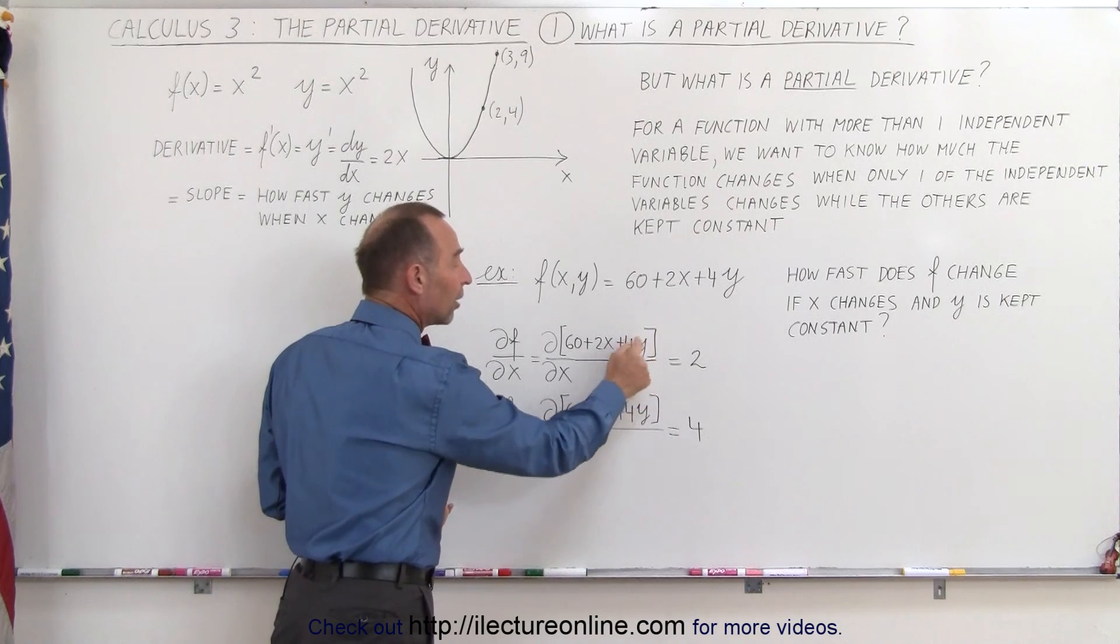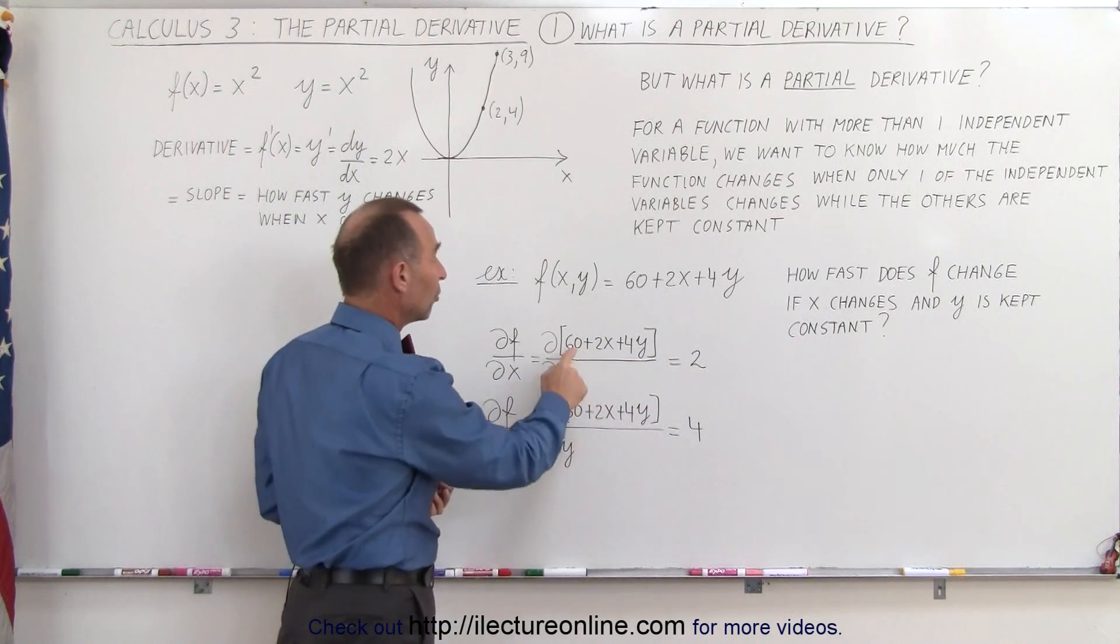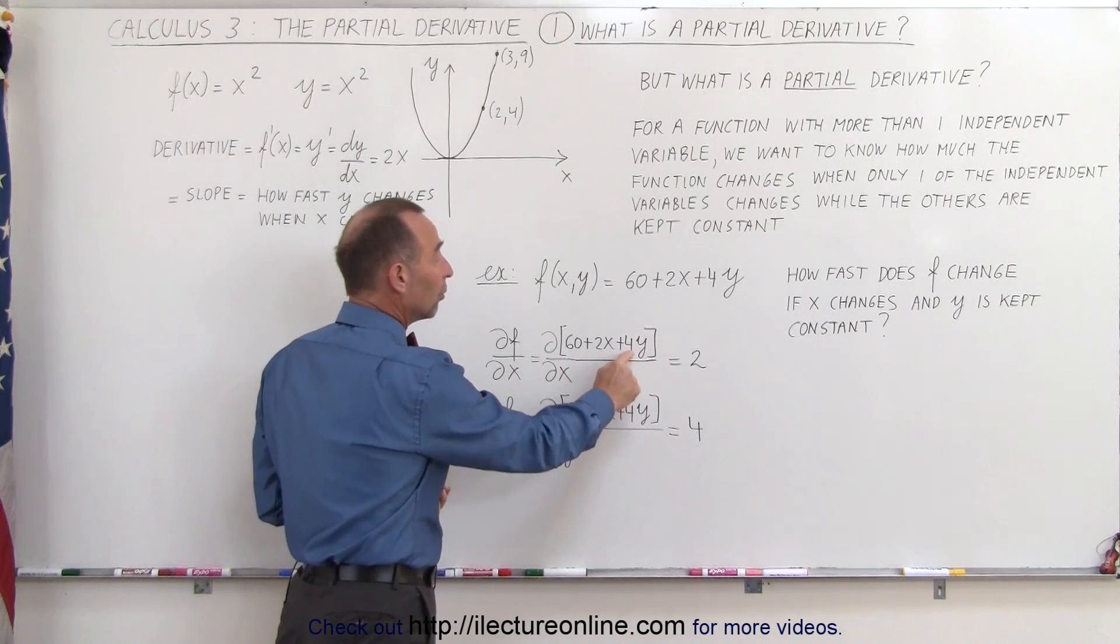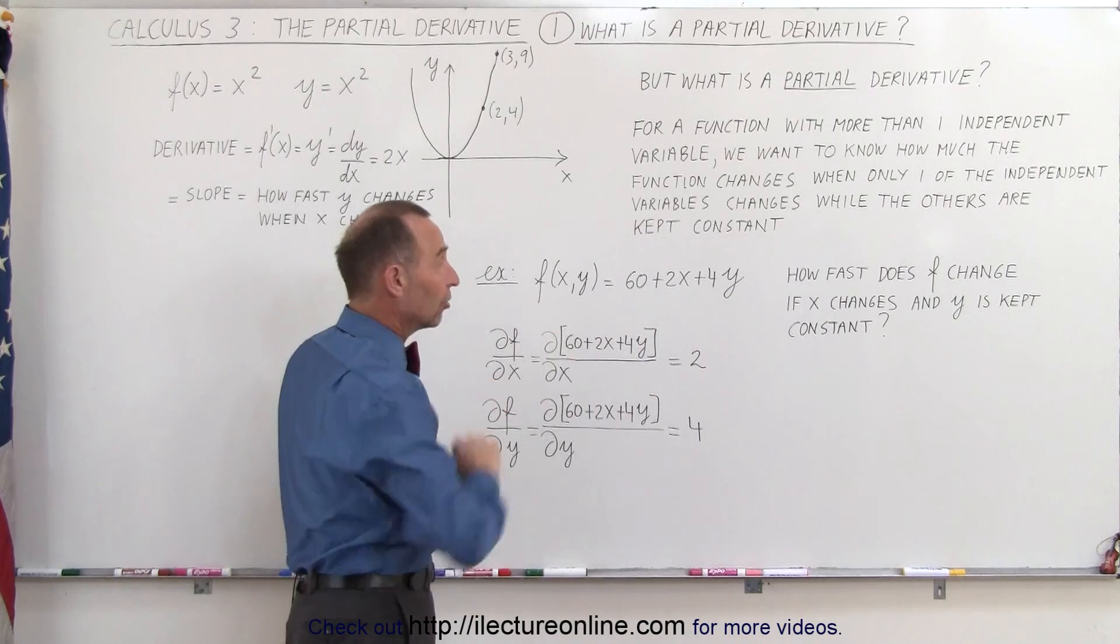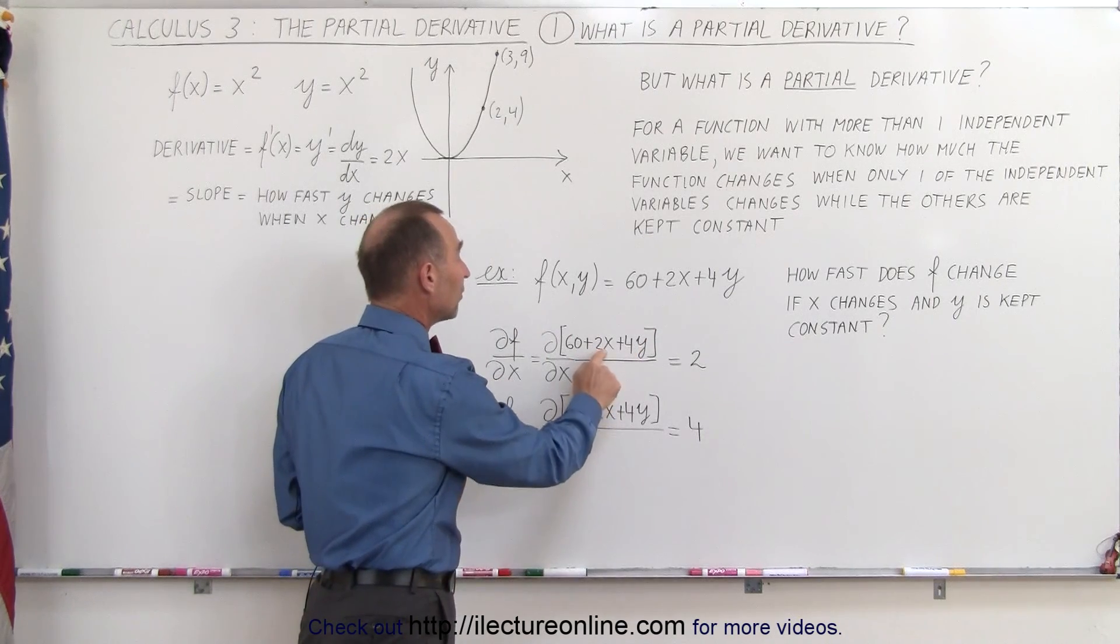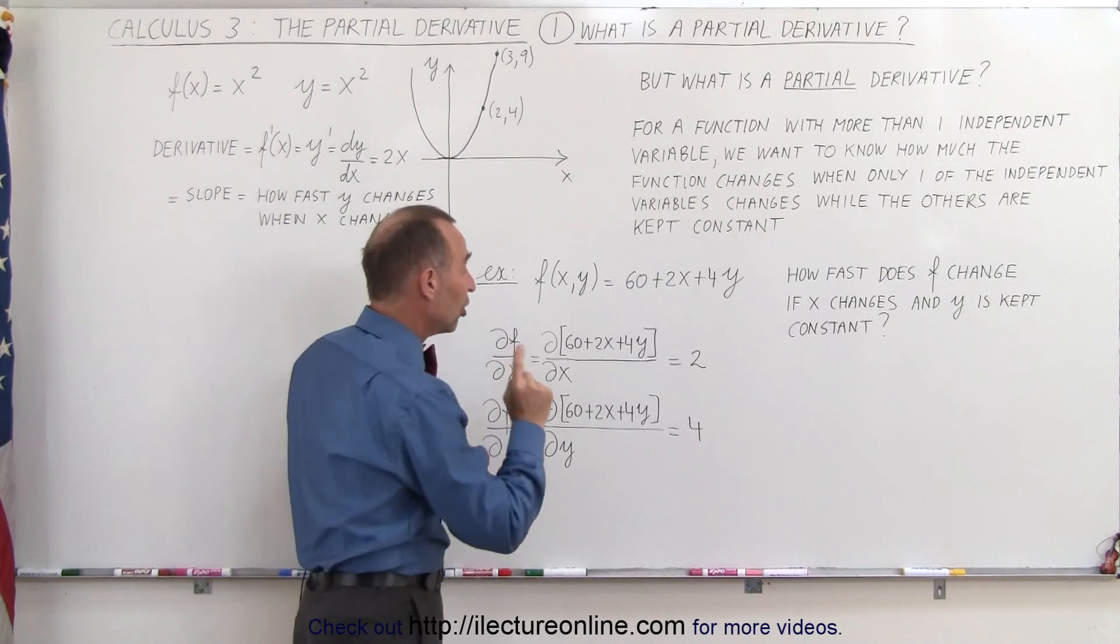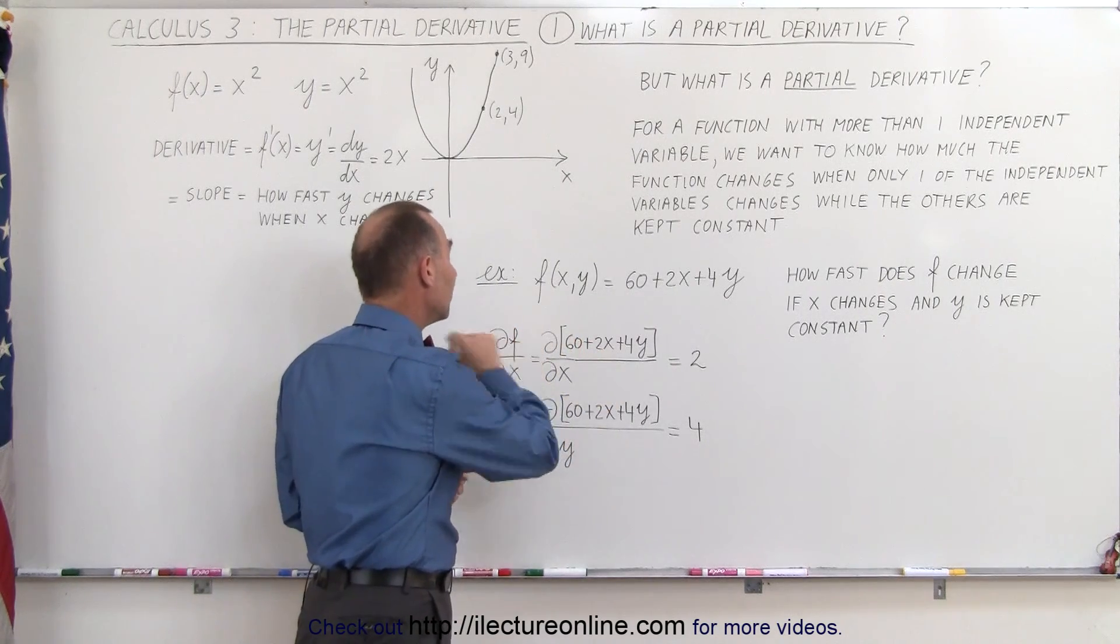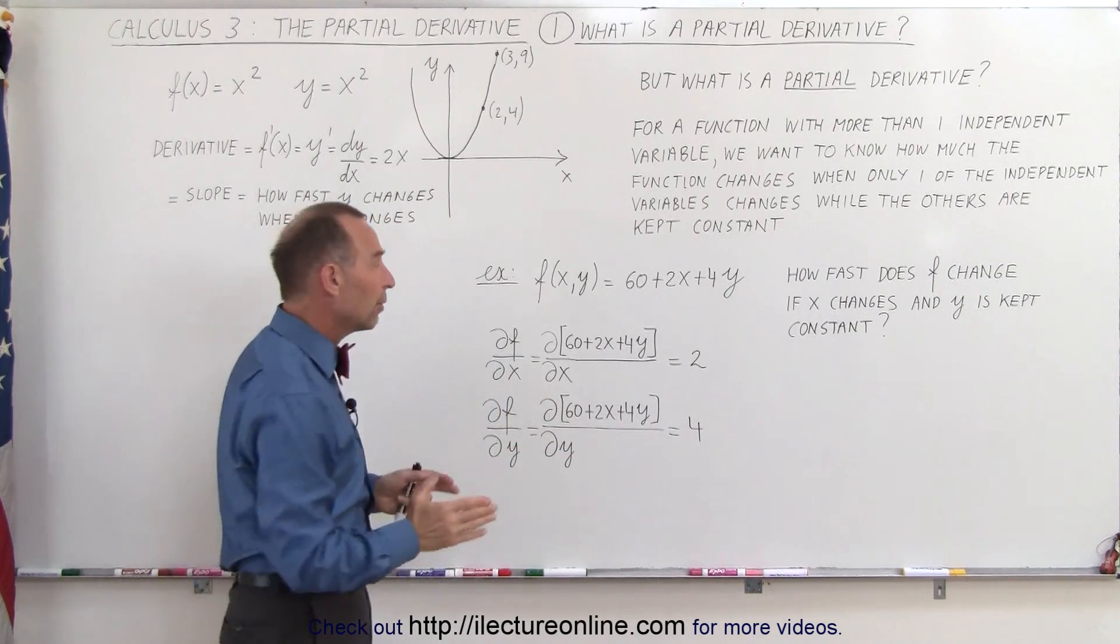We keep all the other variables constant, and only x is a variable in this case, which means the derivative of a constant is 0. The derivative of 4y will also be 0 because we consider that constant. Y doesn't change, and then we take the derivative of 2x, which gives us 2. This means when x changes by one unit, the function changes by two units.